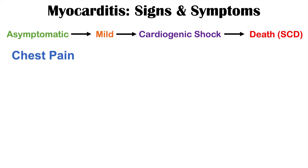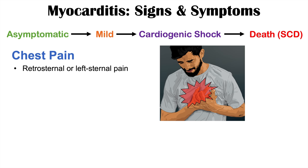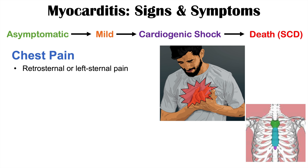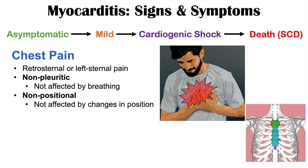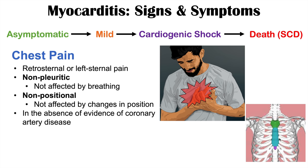Some of the signs and symptoms that can occur with myocarditis include chest pain. This chest pain is going to be retrosternal or left-sided sternal pain — most often the pain is behind the sternum or on the patient's left. The chest pain in myocarditis is oftentimes non-pleuritic, meaning it's not affected by breathing, and often non-positional. This chest pain occurs in the absence of evidence of coronary artery disease.